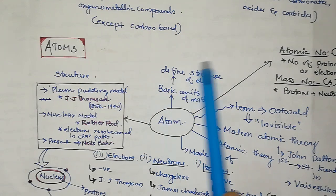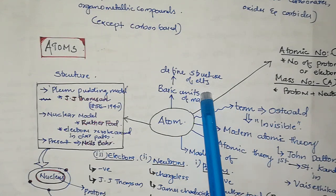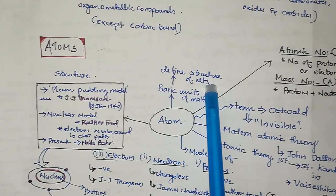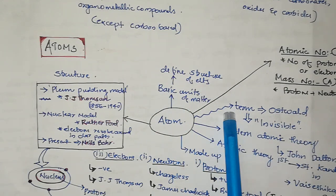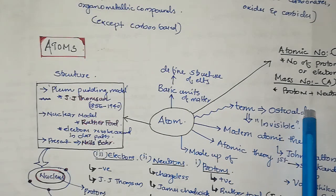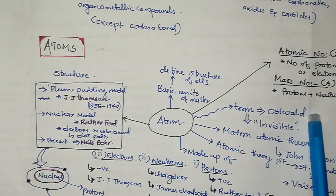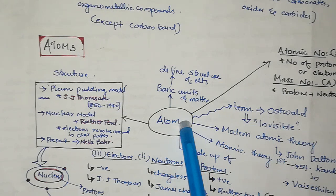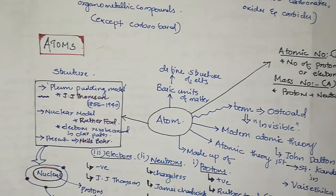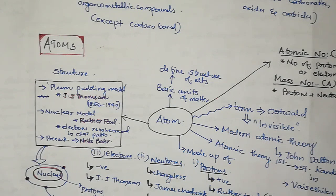Chemistry defines the structure of elements. The term atom was first coined by Osterwald. Osterwald means that atom is invisible — the meaning of atom is invisible.